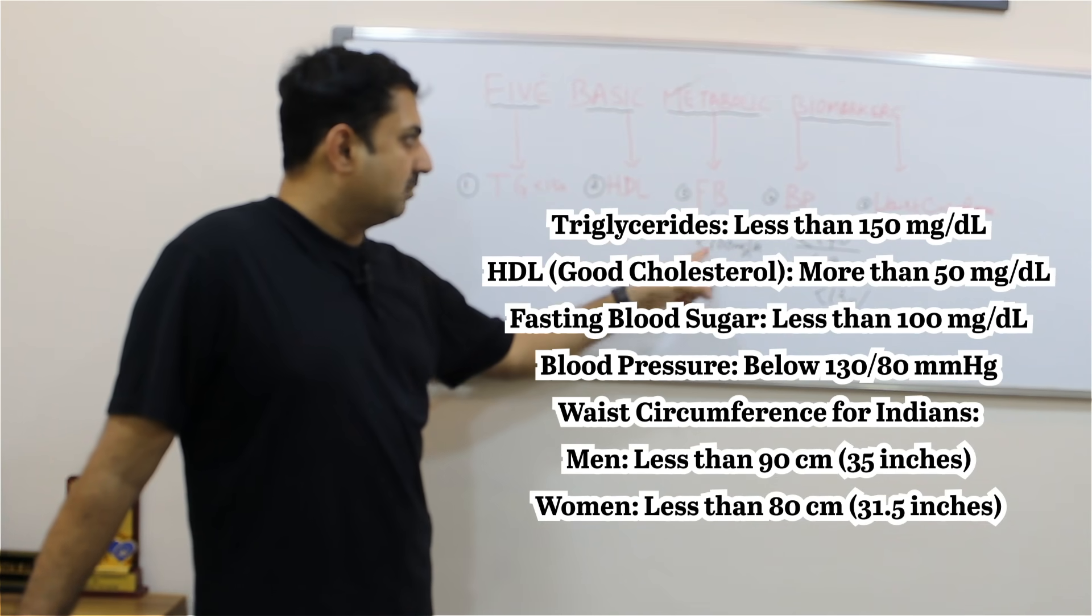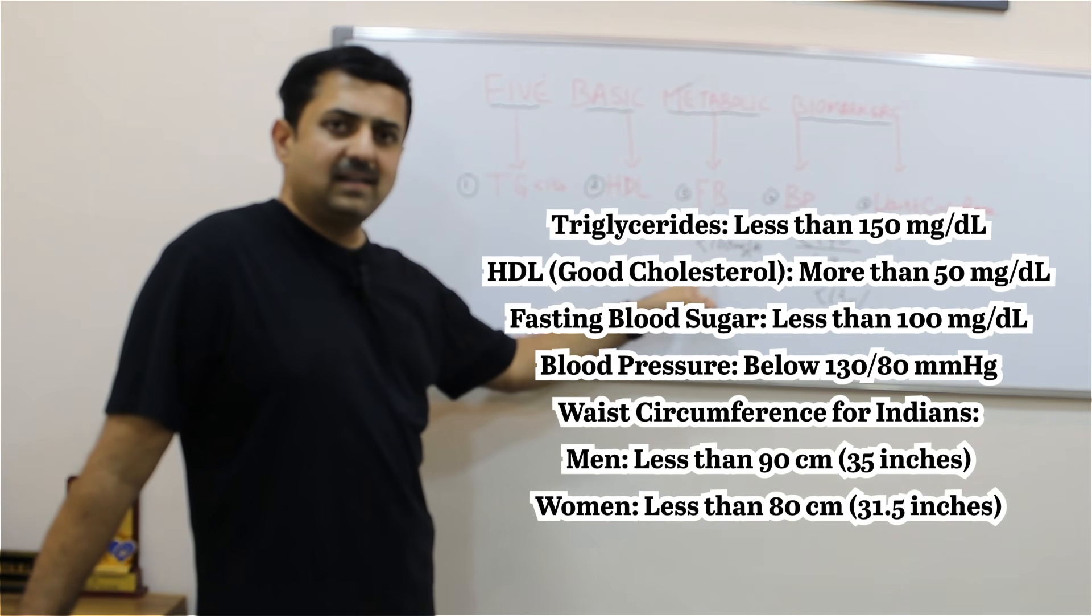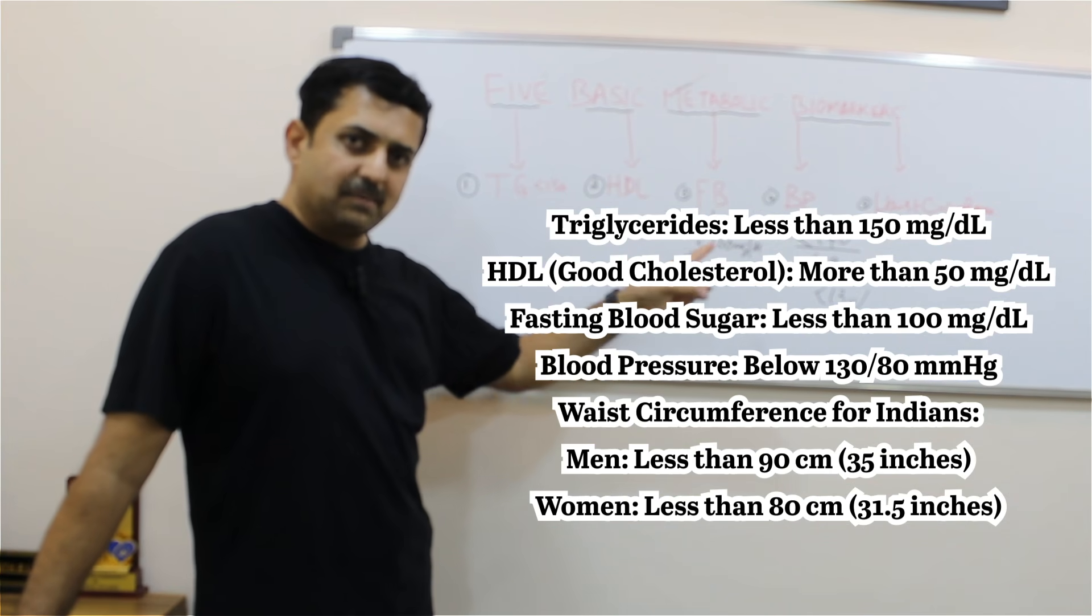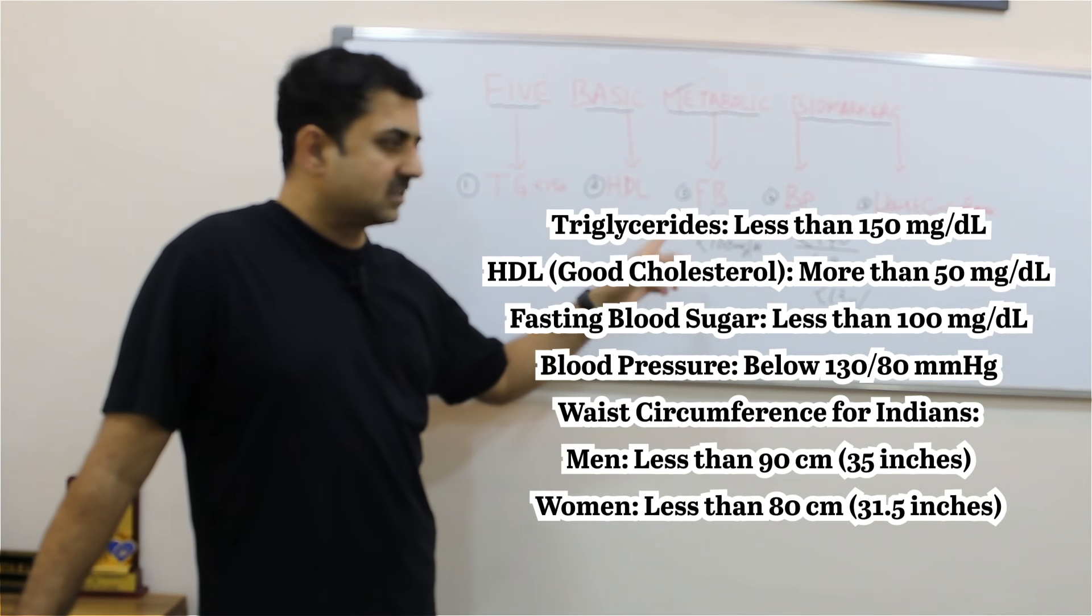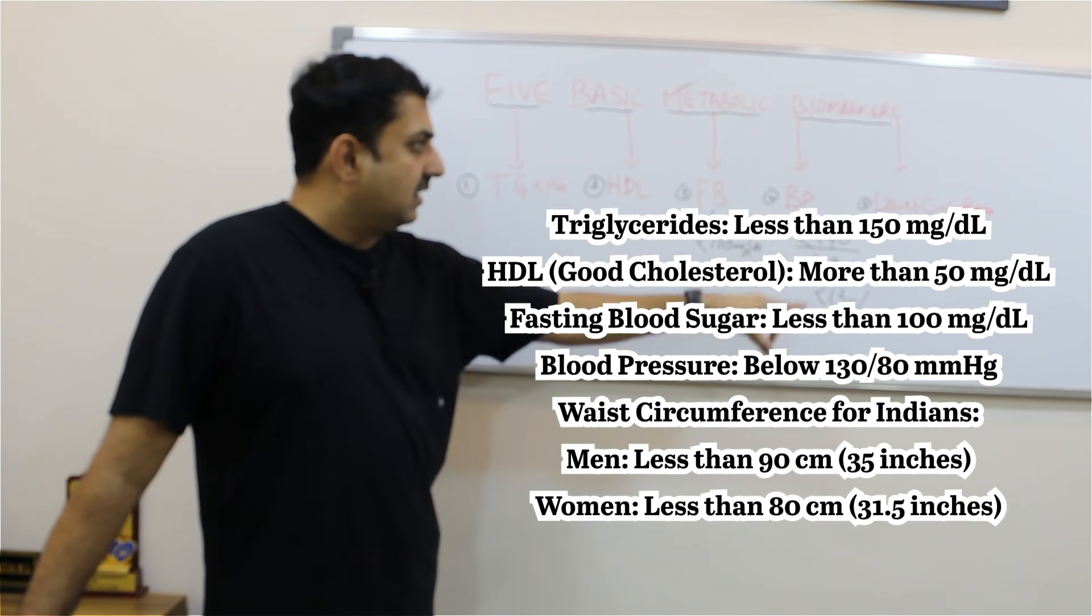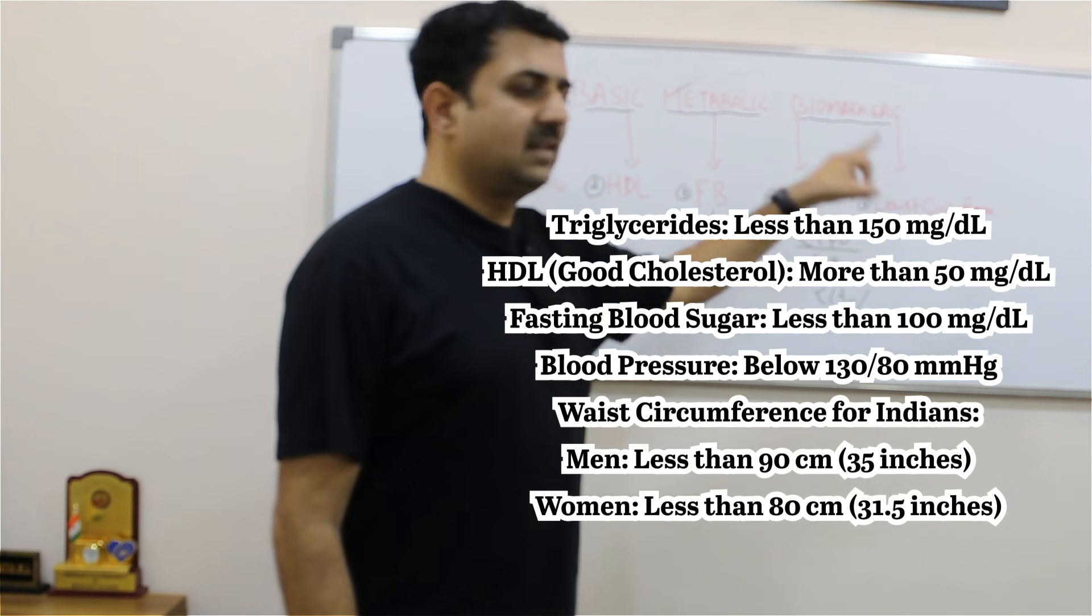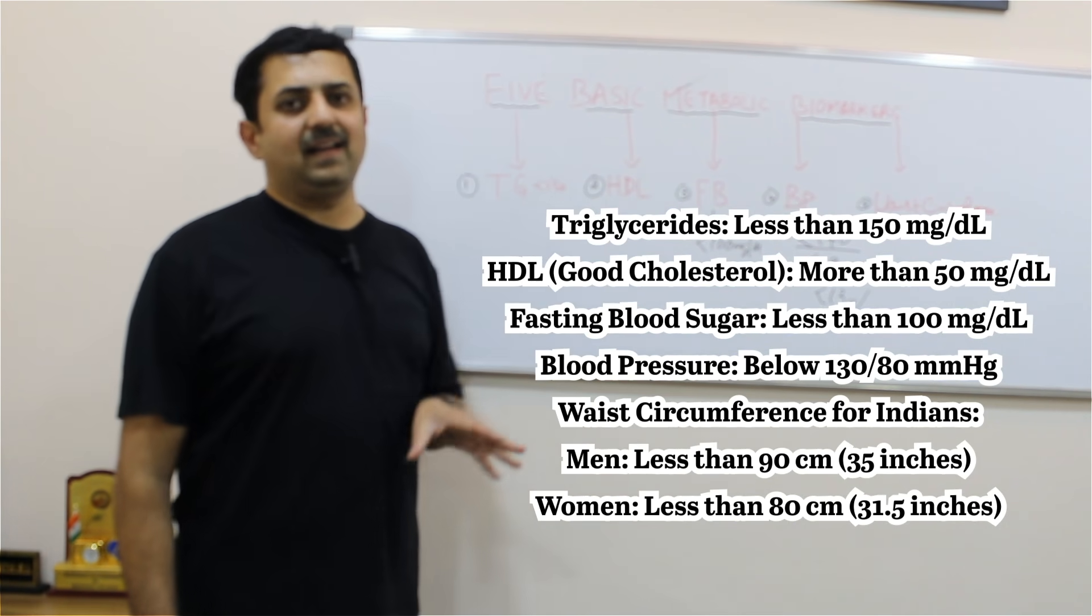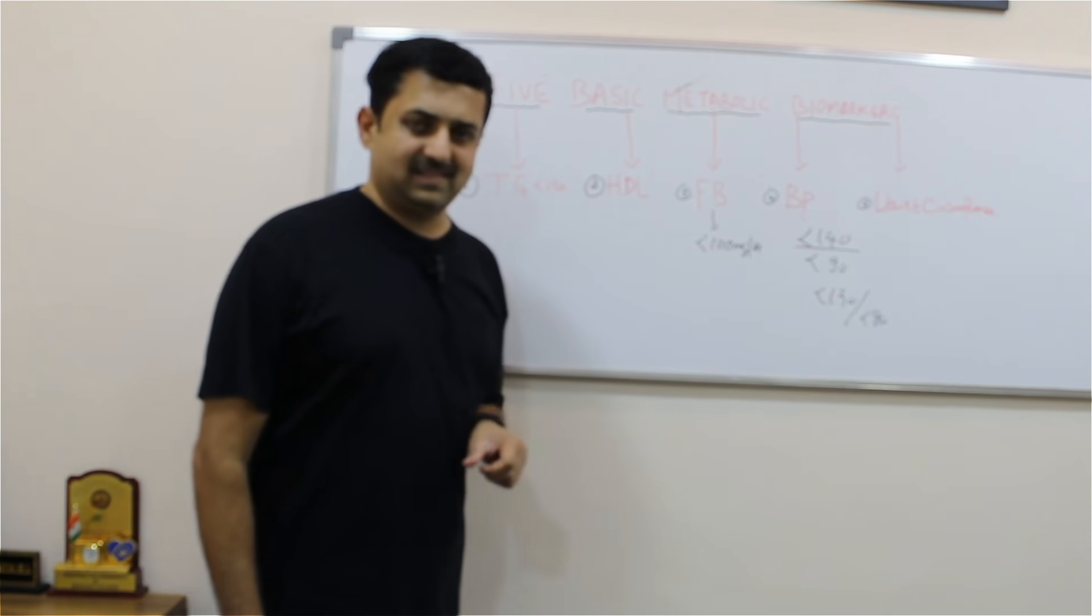Fasting blood sugar less than 100. Fasting blood sugar should be checked after eight hours of the last meal. Blood pressure less than 130/80, and waist circumference less than 90 in men and less than 80 in women. That's it.